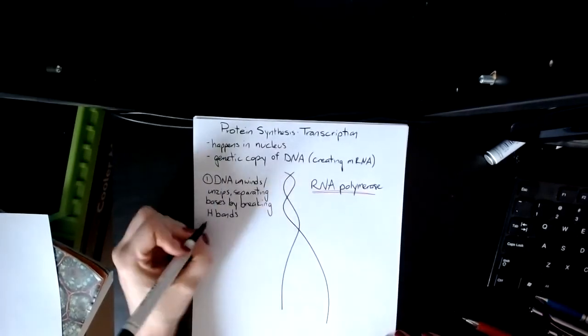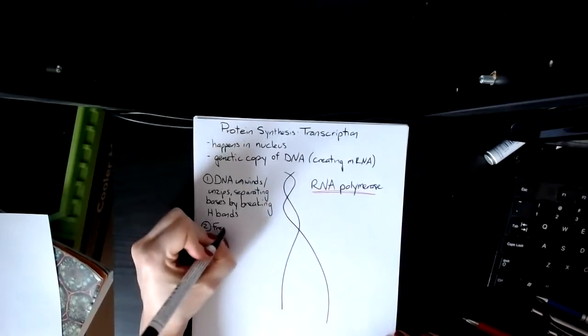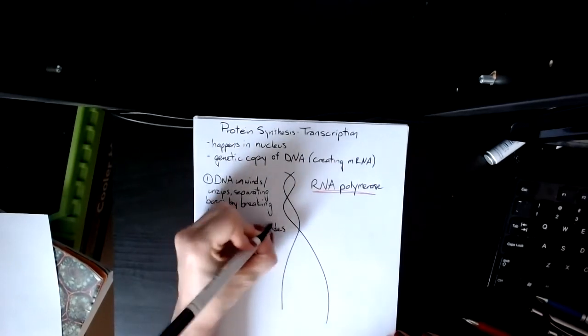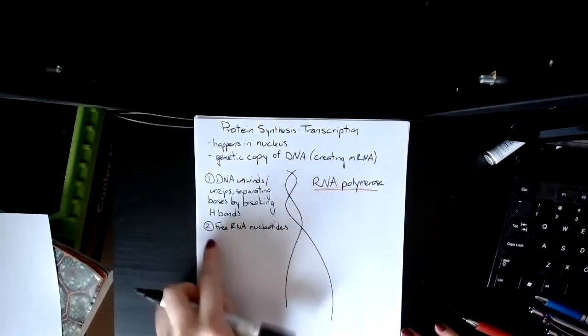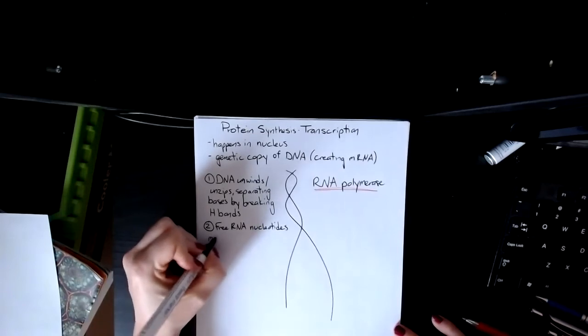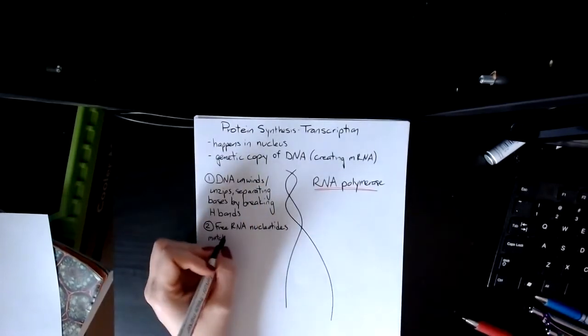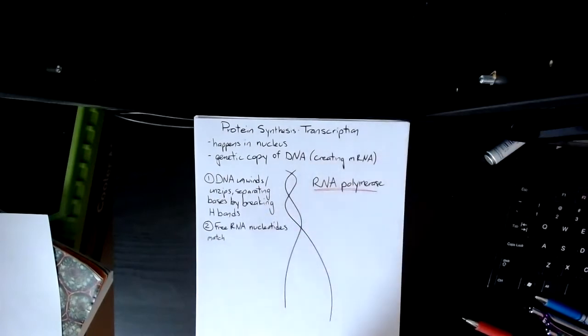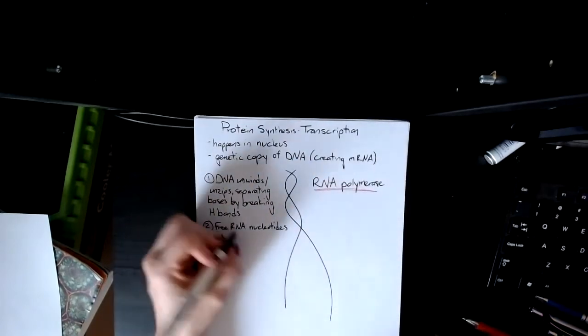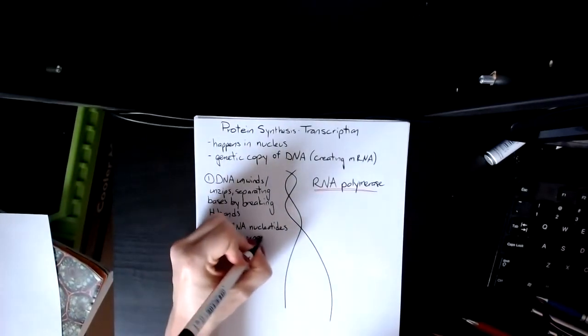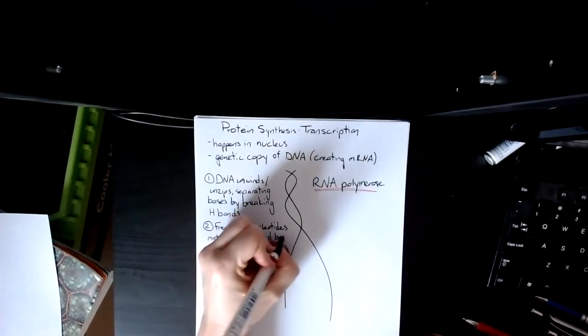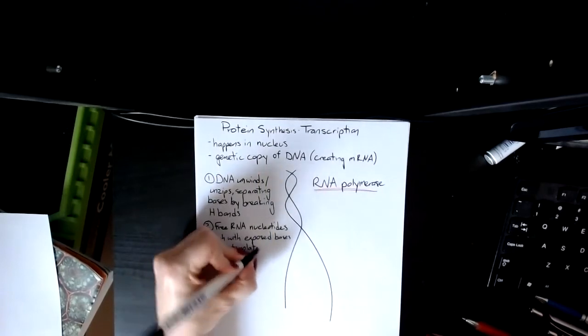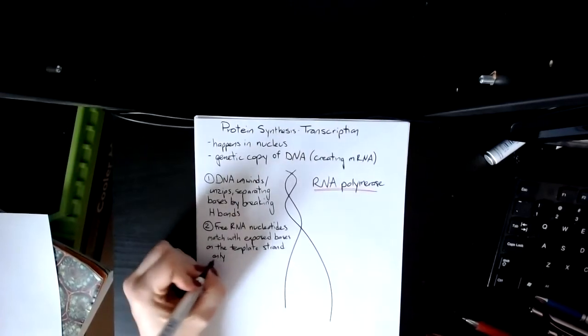You're breaking the hydrogen bonds and then you have free RNA nucleotides come in. Mononucleotides if you want, but nucleotides or mononucleotides can be used interchangeably. Your mark scheme usually doesn't differentiate. So free RNA nucleotides match. Unlike DNA replication where both strands are being used as a template, there is only one strand that is being copied into the mRNA. They match with the exposed bases only on one strand, so on the template strand only.